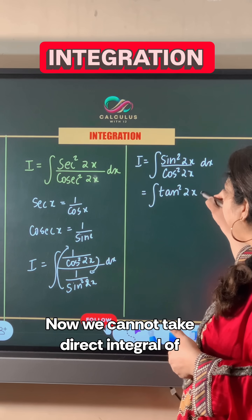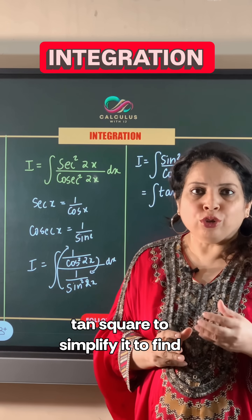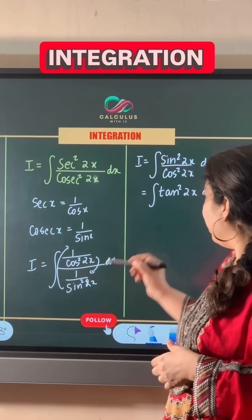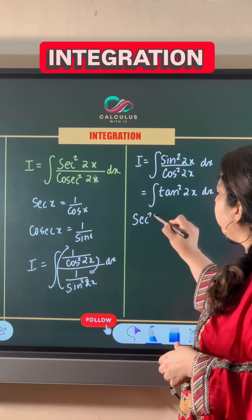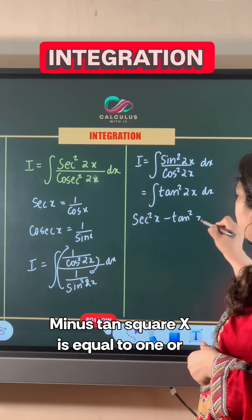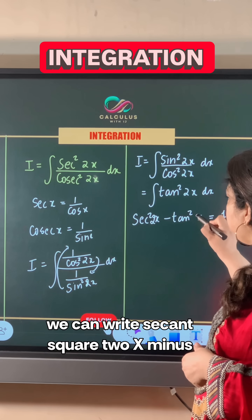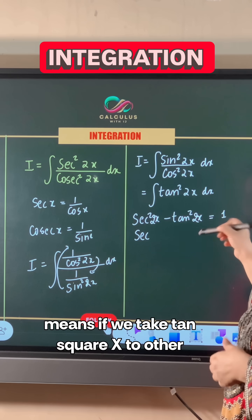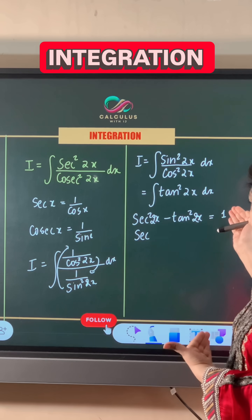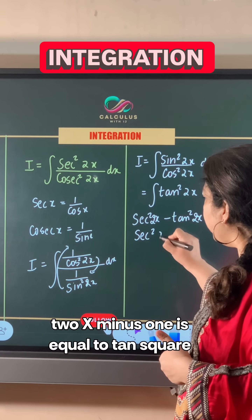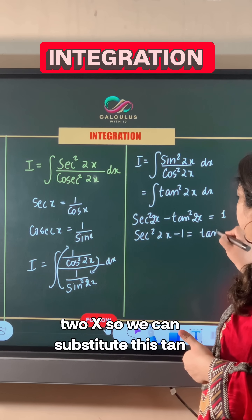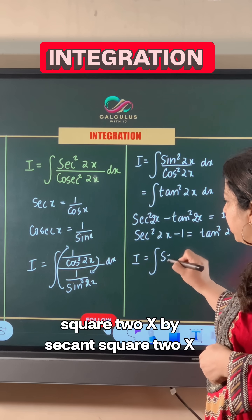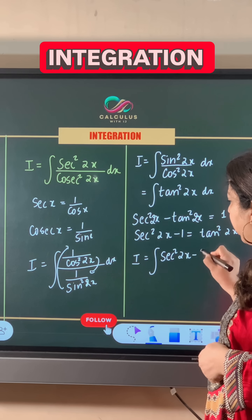We cannot take the direct integral of tan squared 2x; to find its integral, we need to convert it into secant squared. Using the identity secant squared 2x minus tan squared 2x equals 1, we rearrange to get tan squared 2x equals secant squared 2x minus 1. So we substitute tan squared 2x with secant squared 2x minus 1 dx.